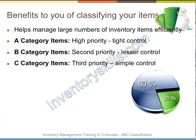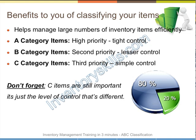The benefit is it helps you manage a large number of inventory items very efficiently. A items — your high priority items — have very tight control. B items, second priority, lesser control. C items, third priority, simple control. But don't forget that C items are still very important — it's just the level of control that's different. You can't make a vehicle without those four small grommets. They are still very important.